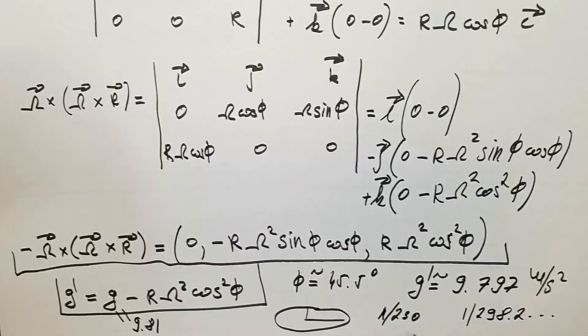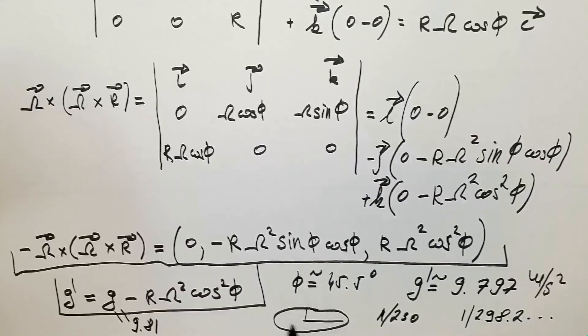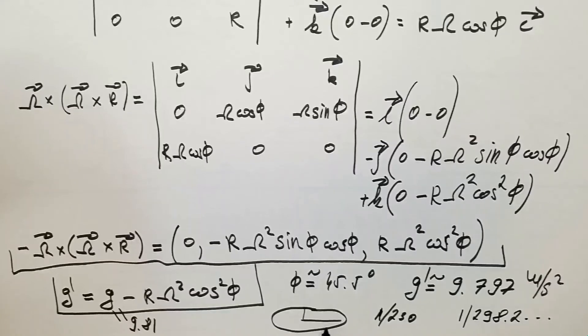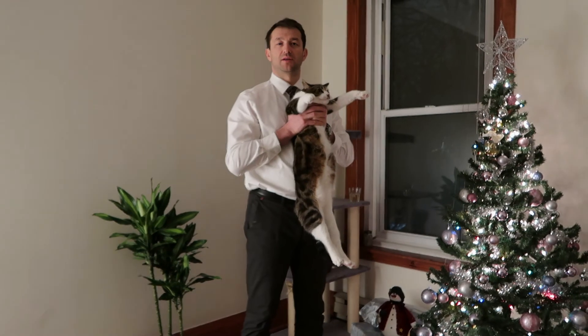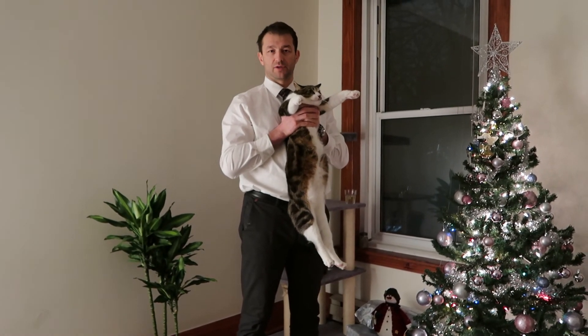Our measurements showed that the real variation is rather 1 over 298 point 2 something, and you can see how close Sir Isaac Newton was with his theoretical calculation in respect to the measured or observed value. Yes, the bulging of the Earth close to the equator is due to centrifugal force or centrifugal acceleration that we discussed here.